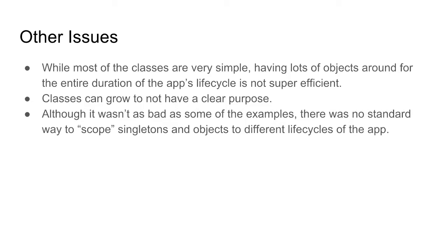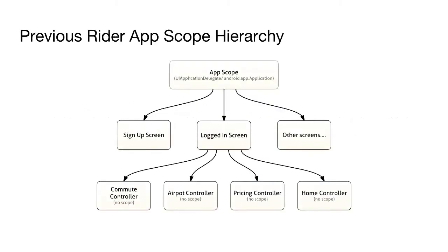This is what the previous app looked like. It wasn't all app scoped, but all the scopes we had were defined by screens — there's a signup screen scope, a logged-in scope, and some other screens had scopes. But features couldn't define their own scopes. There's a commute feature, airport feature, pricing feature — they were all jammed up in the logged-in scope and couldn't define their own scopes or requirements. So if everything is in the logged-in scope, the global state argument is pretty much the same.